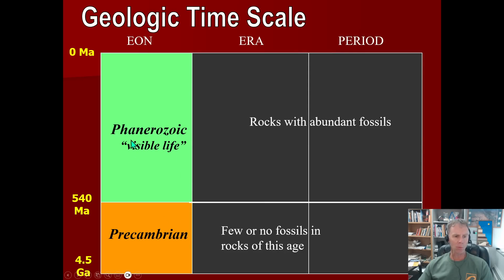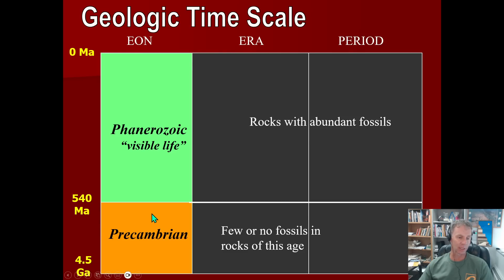The last part of this word — 'zoic,' like zoology — you might recognize as associated with life. So Phanerozoic literally translates to 'visible life.' This line in the sand is drawn where we see rocks that contain visible, obvious fossils versus rocks that originally we didn't think had fossils in them. We've come to realize there are fossils in some late Precambrian rocks, but they tend to be quite primitive — soft-bodied organisms or simple things like algae or bacteria. That line is drawn at about 540 million years ago.